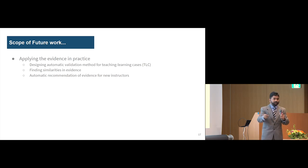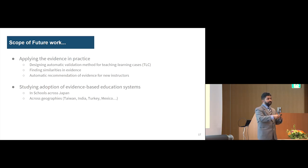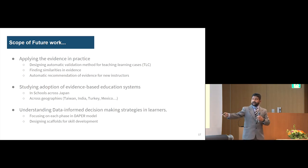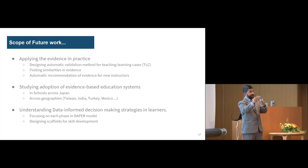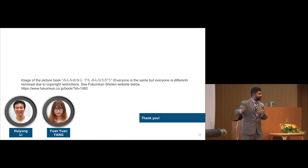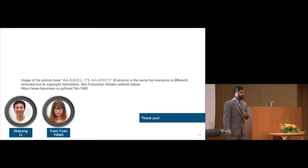There are many scopes of future work in both strands of research: how to apply evidence in practice, how to design algorithms to automatically validate it, find similarities in evidences and automatically recommend them to another teacher, and study the scope of adaptation across boundaries and across schools or universities. For learner decision-making strategies, we want to focus on each phase of the DAPER model. I would just like to show one picture — the first and only book I read in Japanese — and thank my great students Lee and Young. Thank you very much.